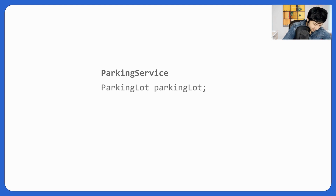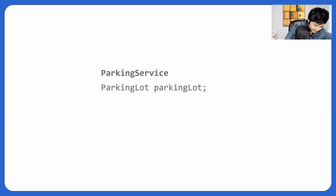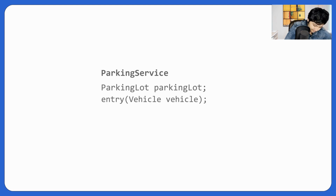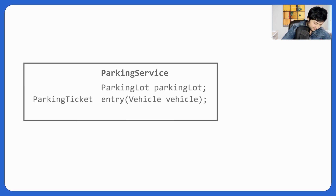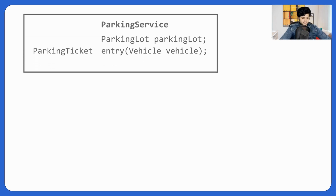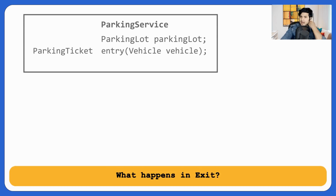So we can now define the entry method. It will take a Vehicle as input and return a Parking Ticket. We're done with the entry operation.